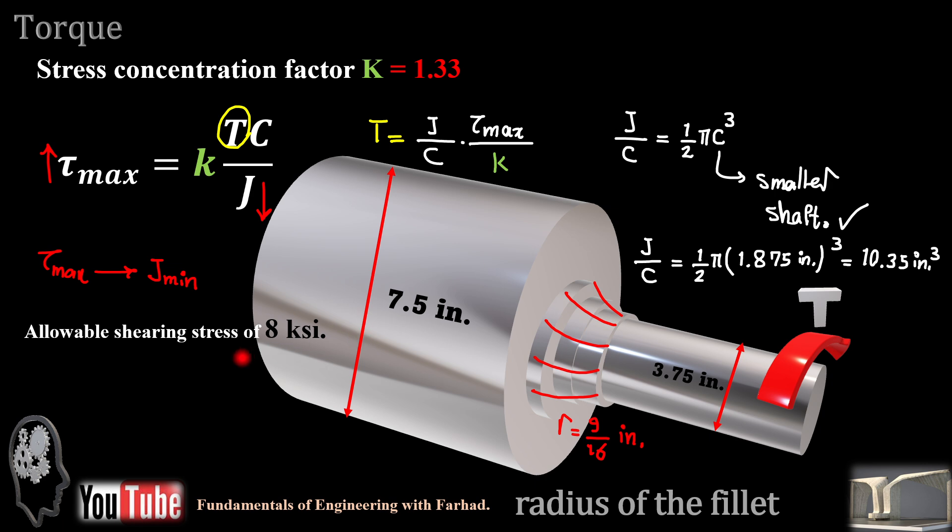On the other hand, we have the allowable shearing stress for steel, which is 8 kilopounds per square inch, based on problem statement. So tau maximum, if you replace that for tau maximum, then divided by stress concentration factor, you can get a smaller amount for tau maximum over K in terms of strength, in terms of maximum stress. That's 6.02 ksi.